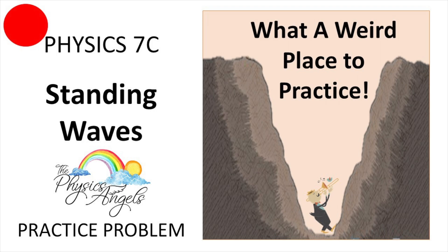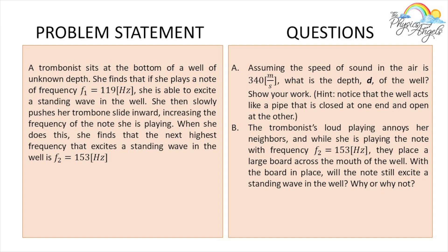So this is the problem we're going to be working with. A trombonist sits at the bottom of a well of unknown depth. She finds that if she plays a note of frequency 119 Hz, she's able to excite a standing wave in the well. She then slowly pushes her trombone slide inward, increasing the frequency, and finds that the next highest frequency that excites a standing wave is 153 Hz. Assuming the speed of sound in air is 340 m/s, what is the depth D of the well?